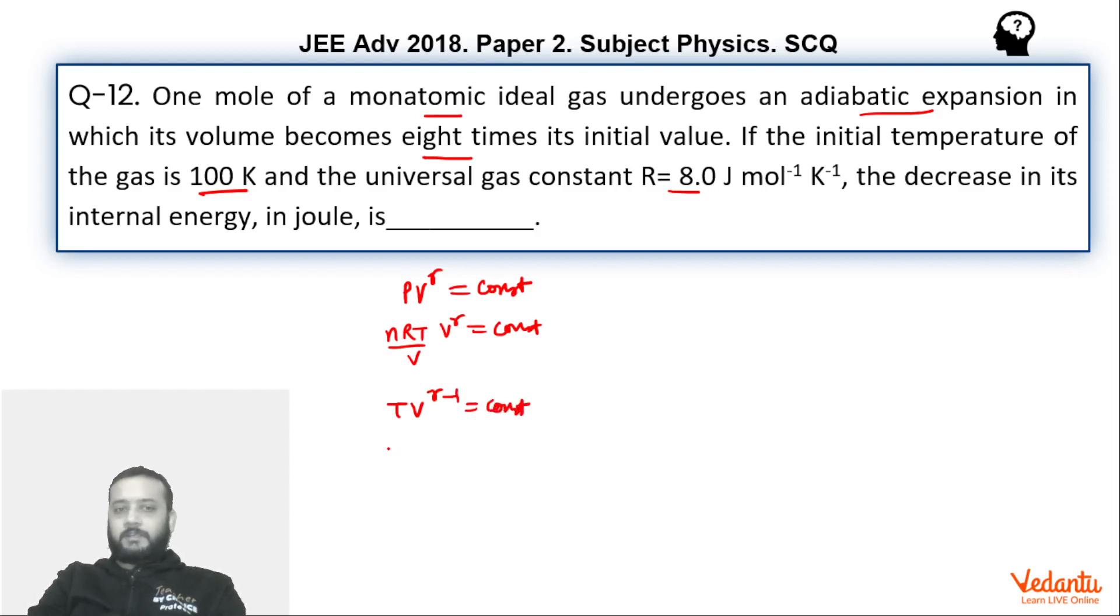So now we can say that initial temperature was 100, initial volume was V to the power γ-1. Gamma for monatomic gas is 5/3, so this will become 2/3. That equals T_final times volume has become eight times, so 8V to the power 2/3.